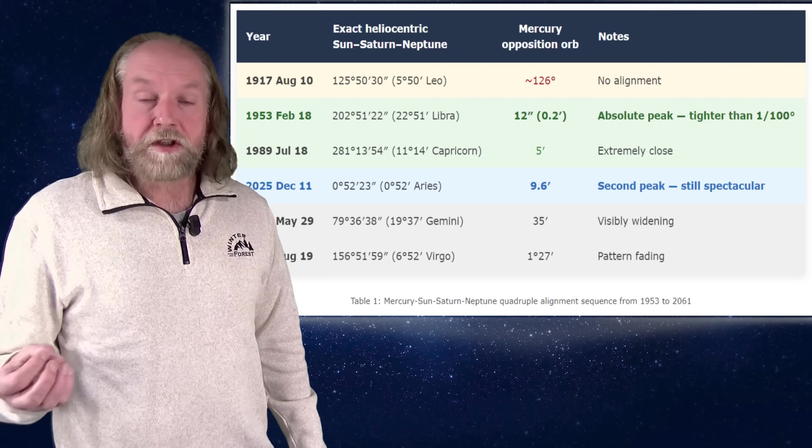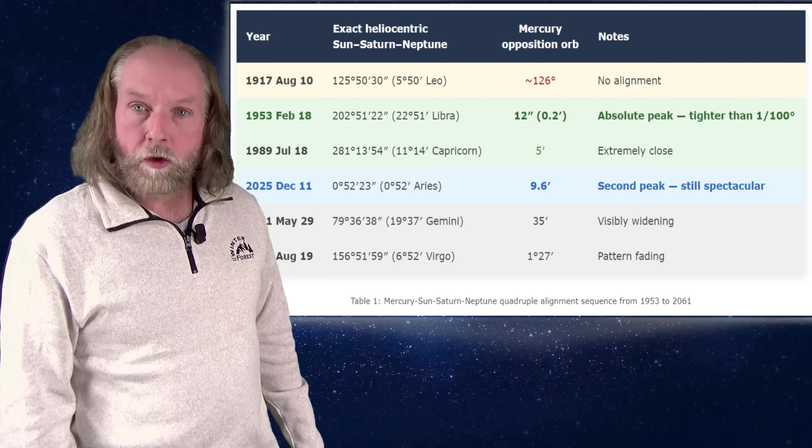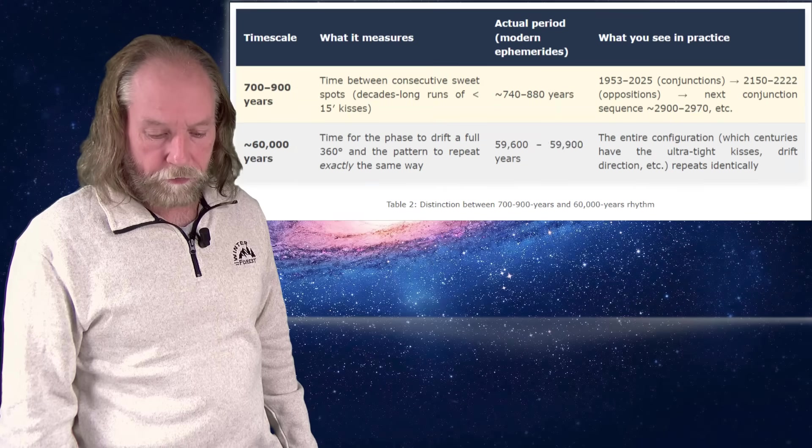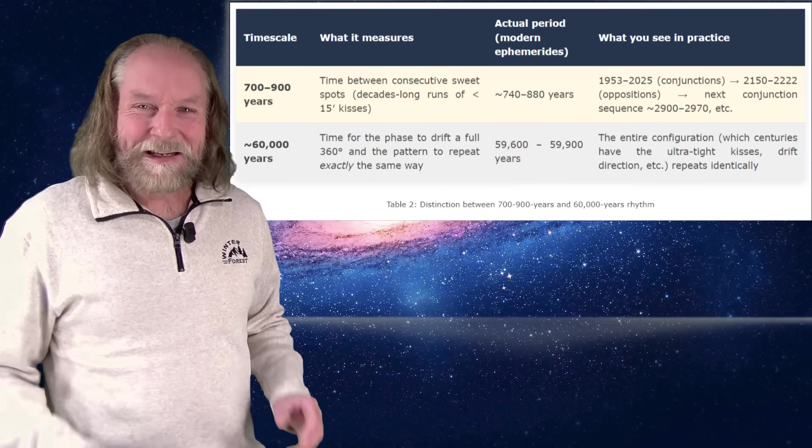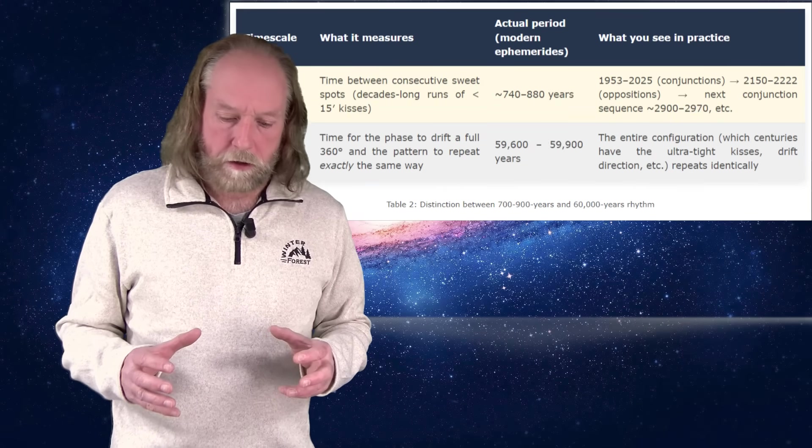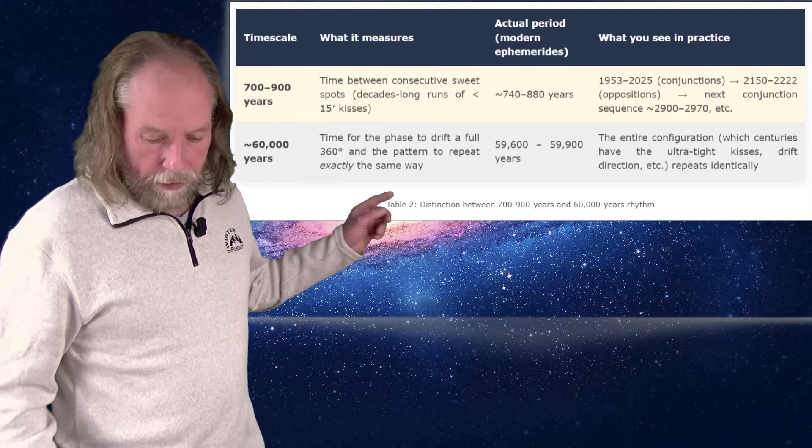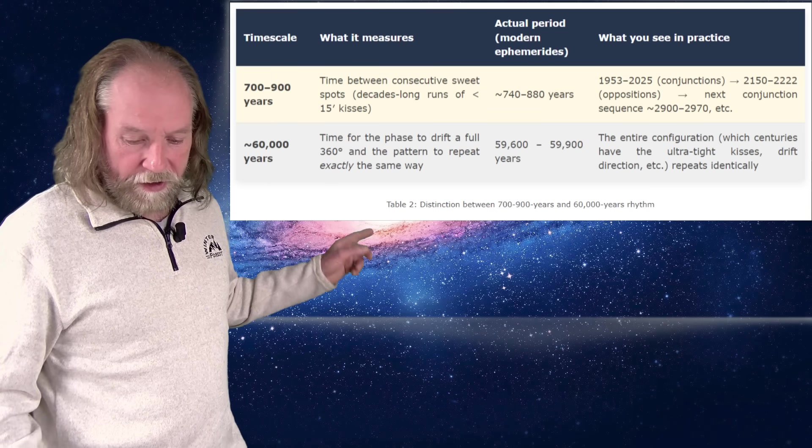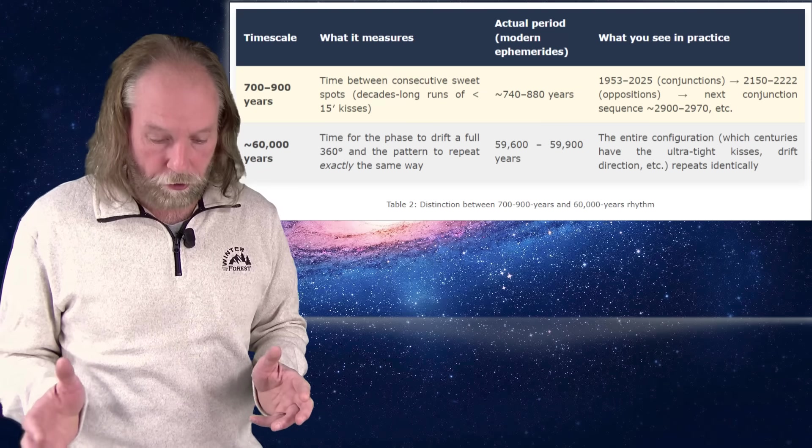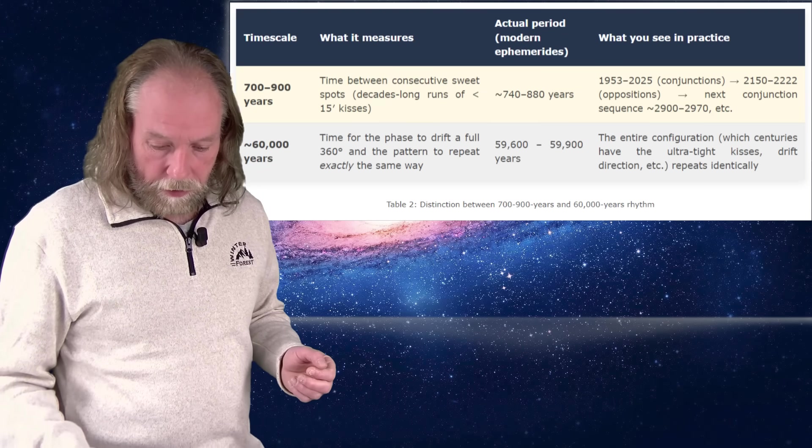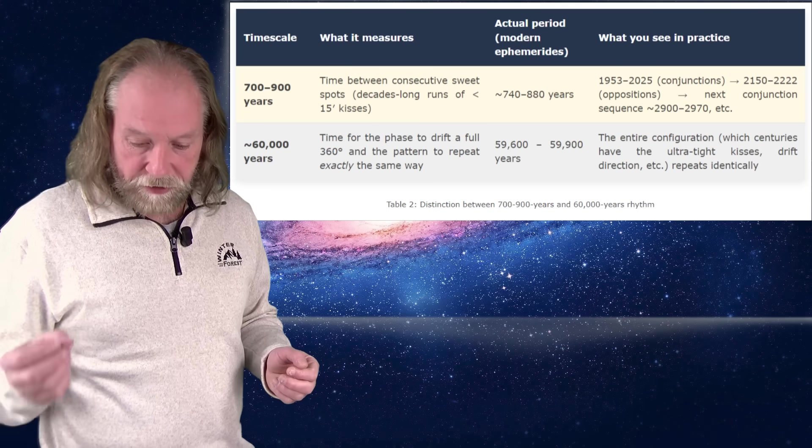If we do the calculations again, you can look it up in the article on the website if you are interested. We come to the following conclusion, it's very interesting. The exact same pattern repeats itself after 60,000 years. And that's the time for the phase to drift a full 360 degrees, that's a full circle. And the pattern then repeats itself exactly the same way.